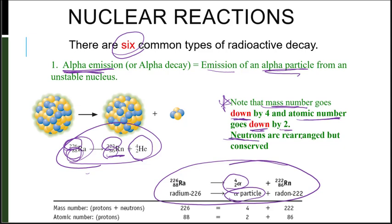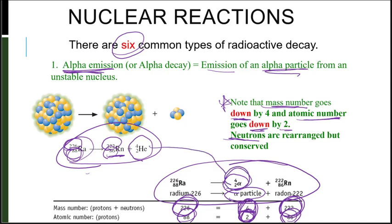The neutrons are rearranged, but they are conserved. If I started with 226 on the left and I have 222 on the right, that means there's a difference of 4. If I started with 88 and it went to 86, that's a difference of an atomic number of 2. That becomes that 4 over 2 — my alpha particle or my helium nucleus.